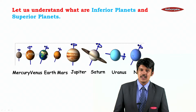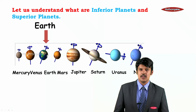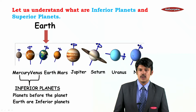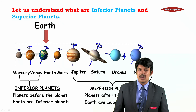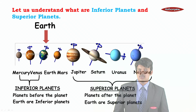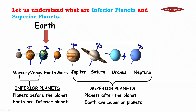These are the eight planets of our solar system. The planets which are before Earth — Mercury and Venus — are called inferior planets. The planets which are after Earth — Jupiter, Saturn, Uranus, and Neptune — are called superior planets. These are how the planets are categorized.